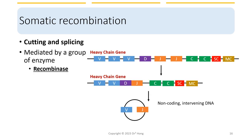Now let's use the heavy chain to illustrate the somatic recombination process. During somatic recombination, a cutting and splicing action happens, during which the non-coding or intervening DNA regions are cut out, and the V, D, and J complexes are joined subsequently. The same process also happens with the light chain. The only difference is that there is no D complex in the light chain gene, and this process is mediated by a group of enzymes called recombinase.